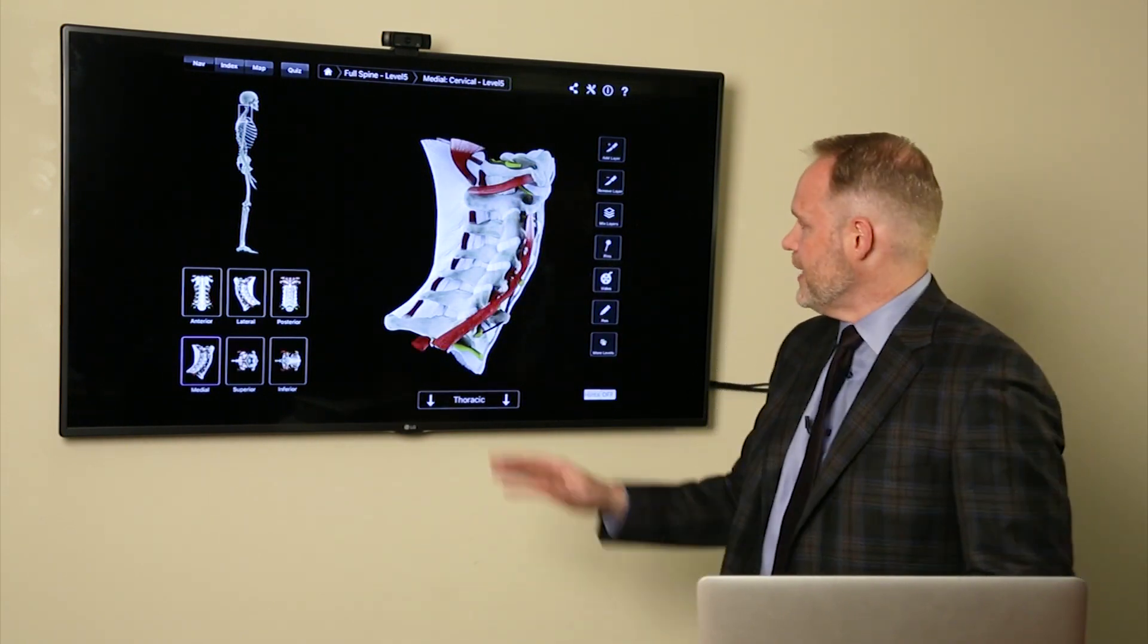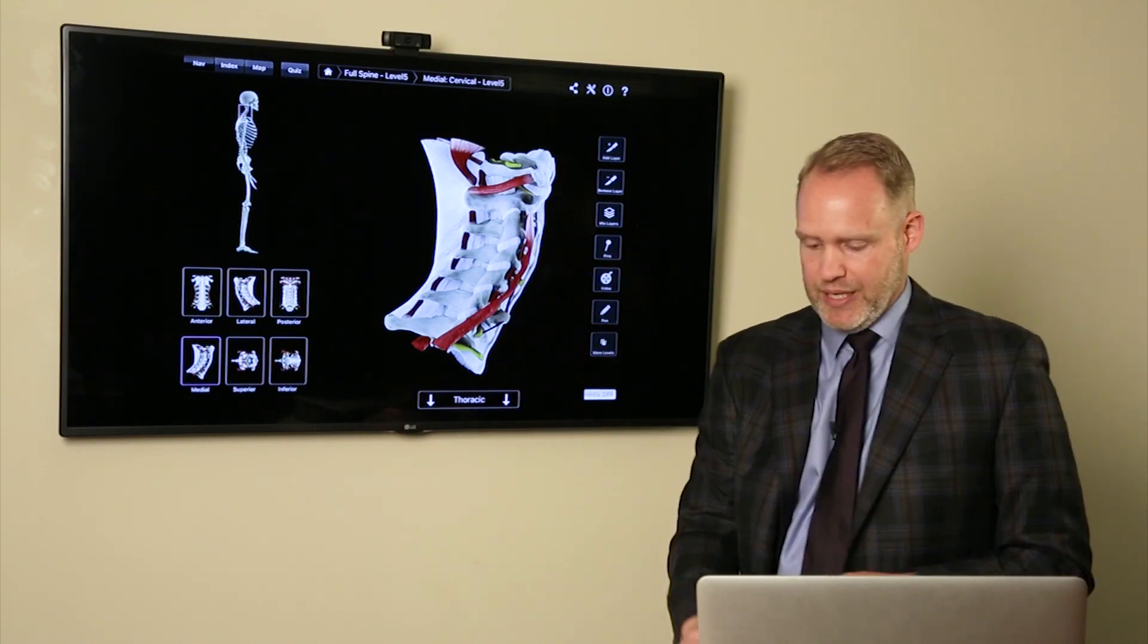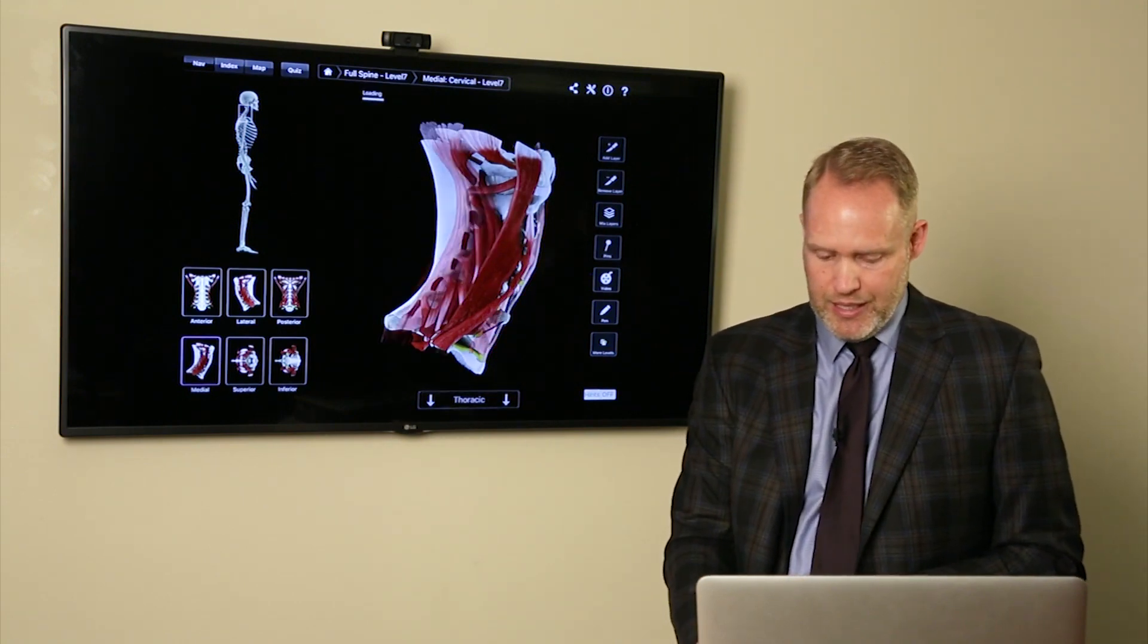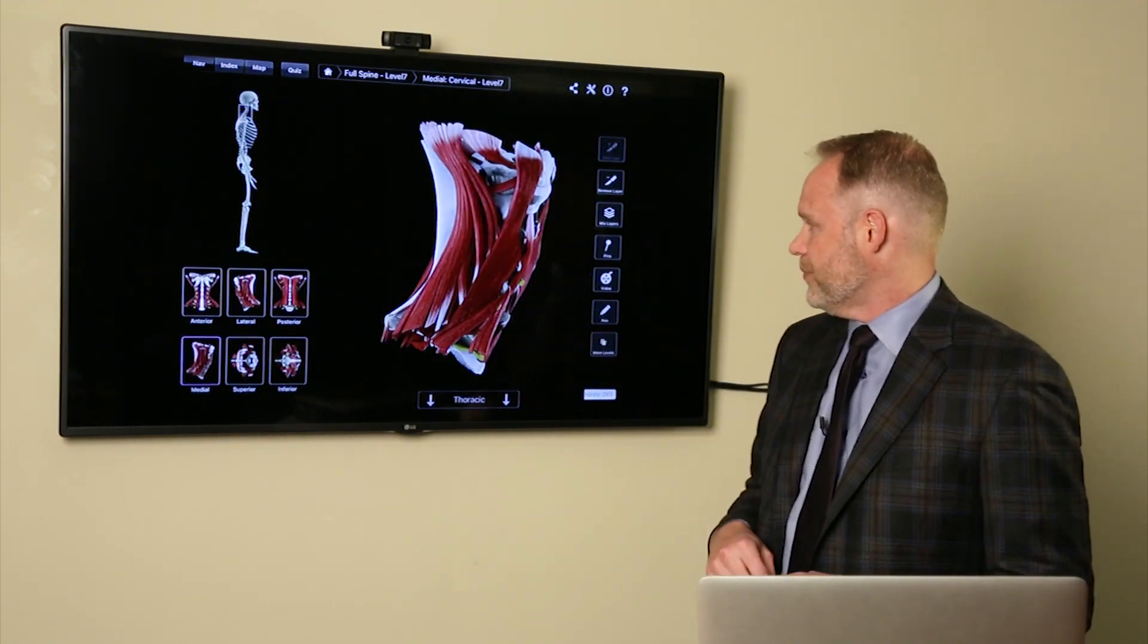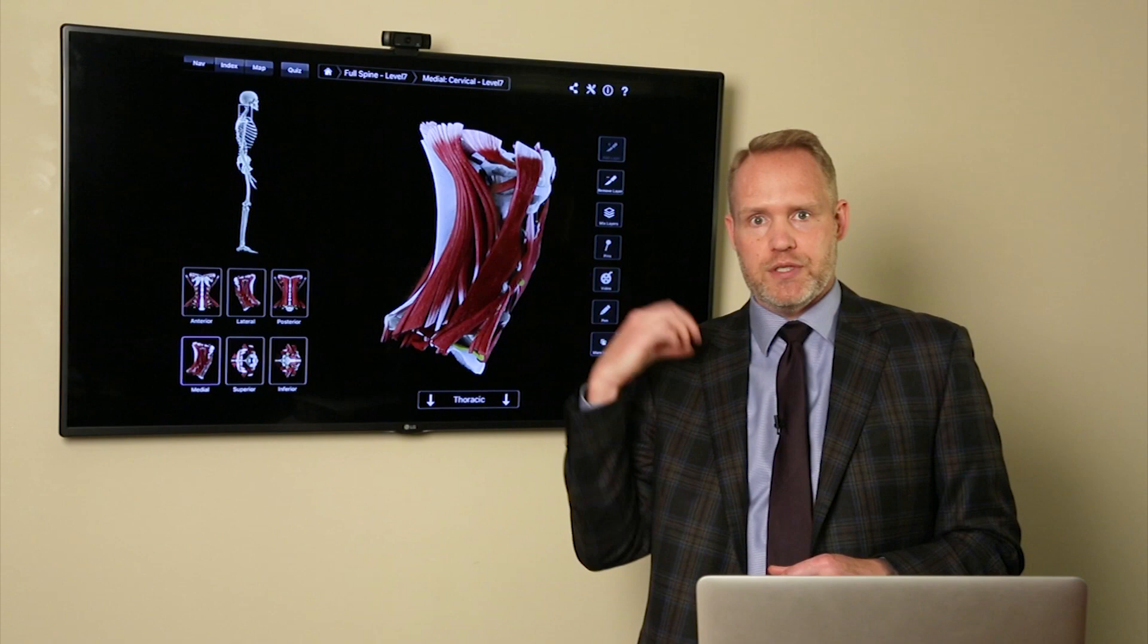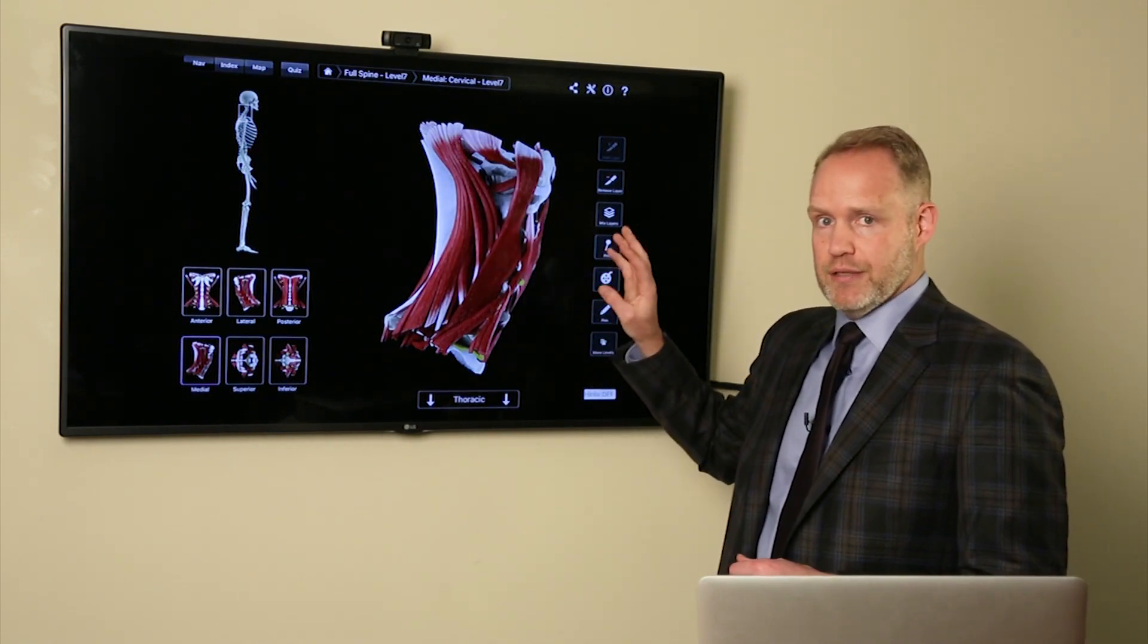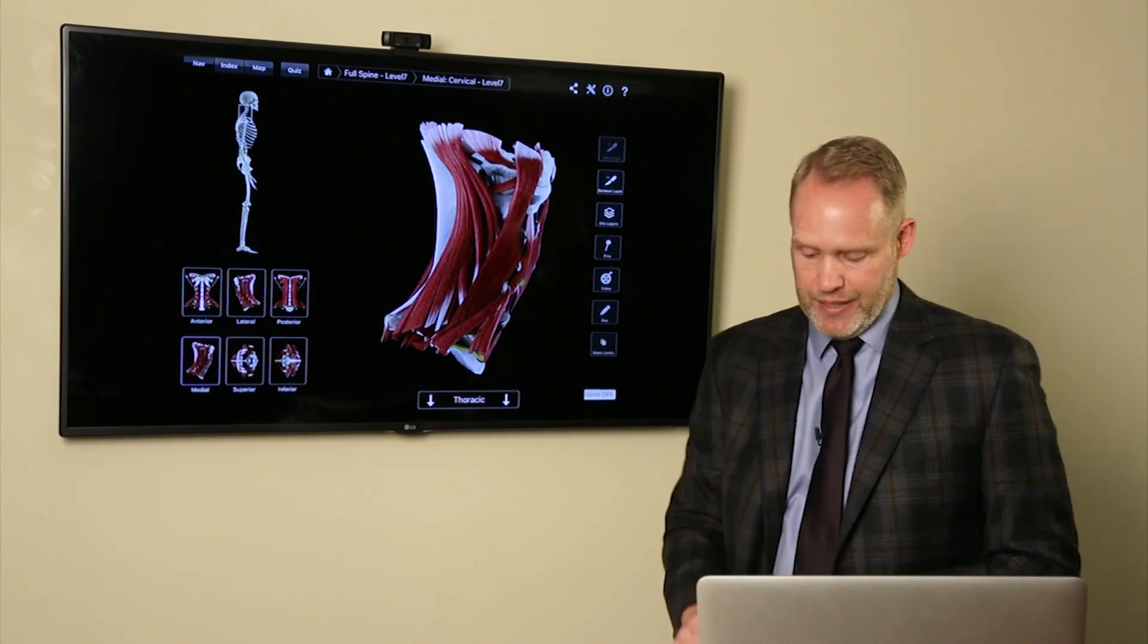And then finally, we have the deep muscles of the spine, and then the less deep muscles of the spine, and then finally, the more surface area muscles of the spine. So there's many layers of muscles, many layers of connective tissue within the spine itself.